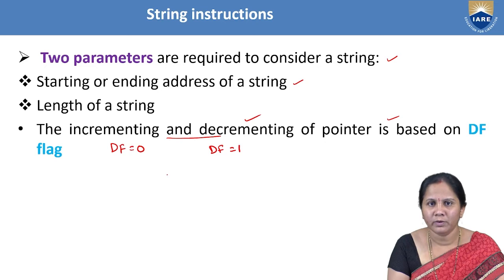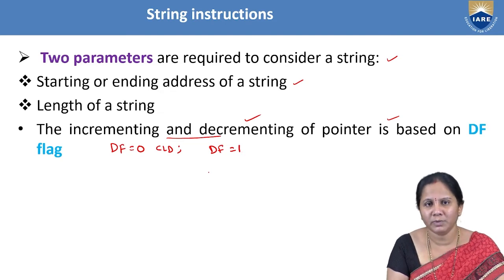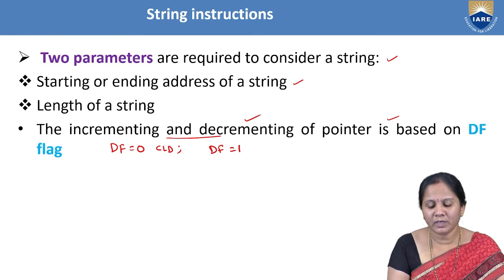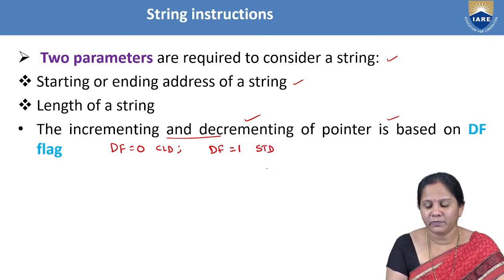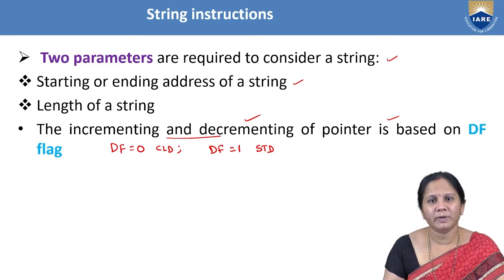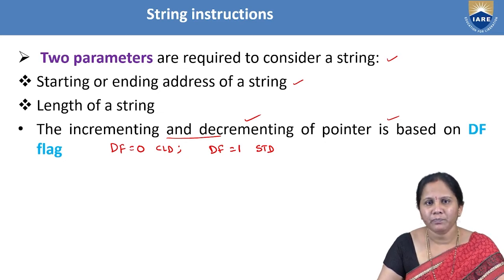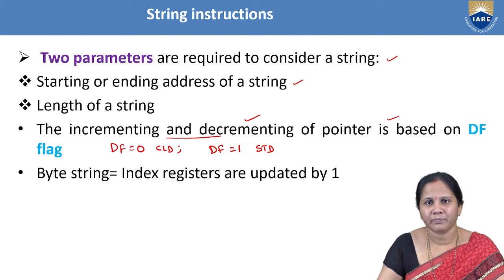When DF is zero, incrementing or decrementing happens by one if the string is byte size, and by two if it is word size. If DF is one (auto-decrement mode), the contents are decremented by one for byte strings and by two for word strings. If DF is zero (auto-increment mode), index registers are incremented by one for byte strings or by two for word strings.